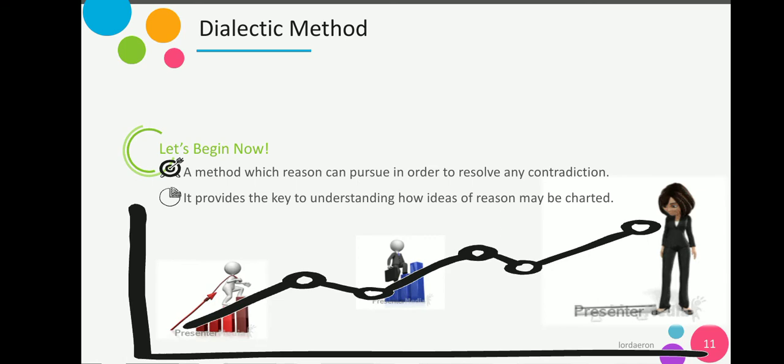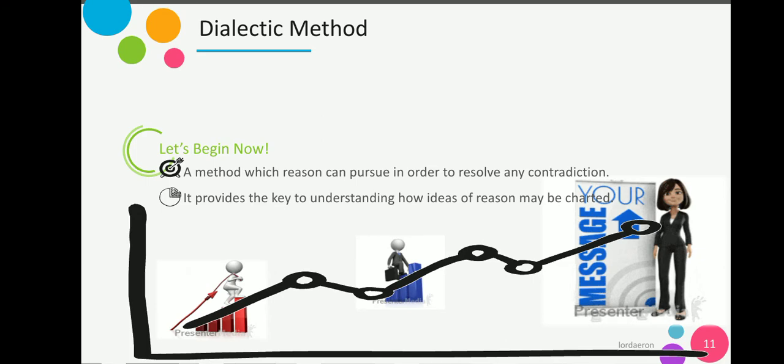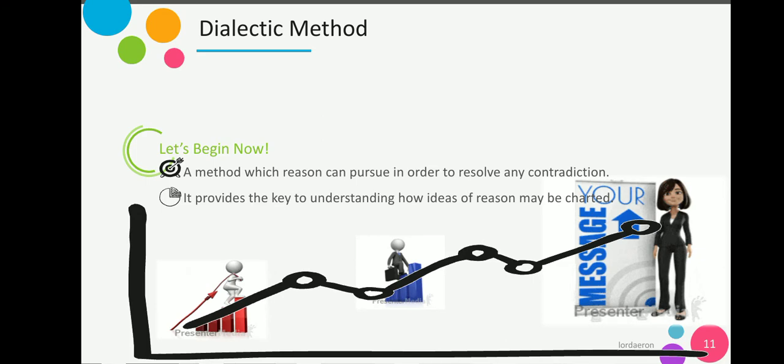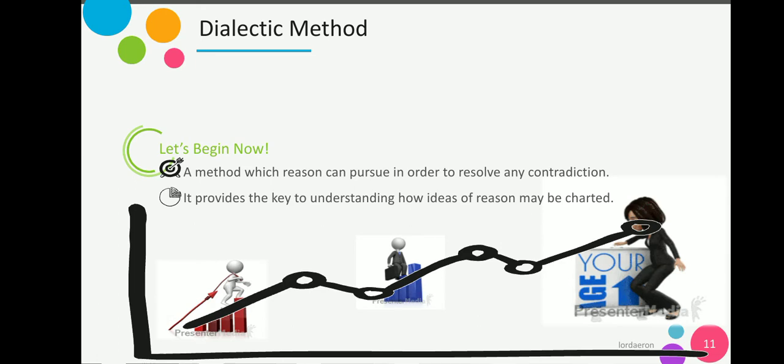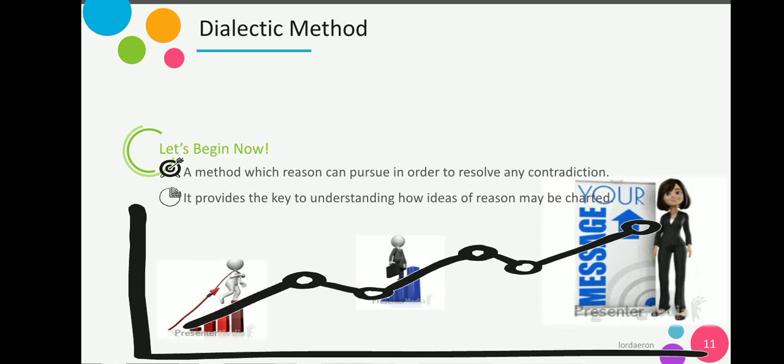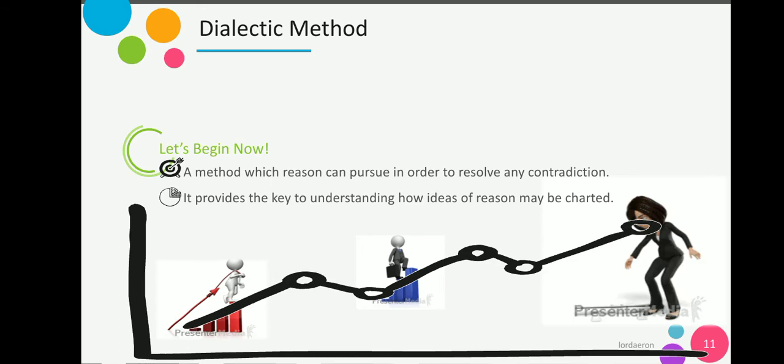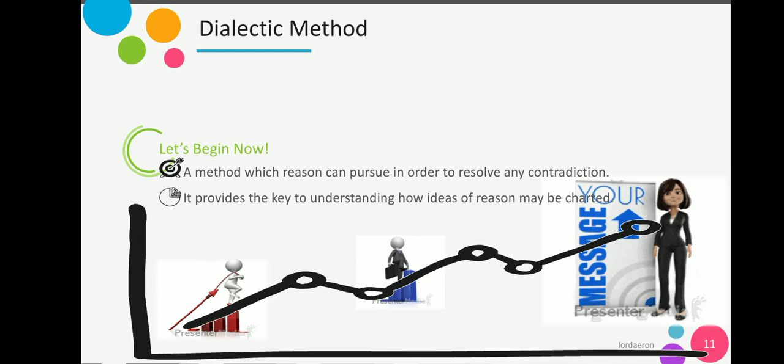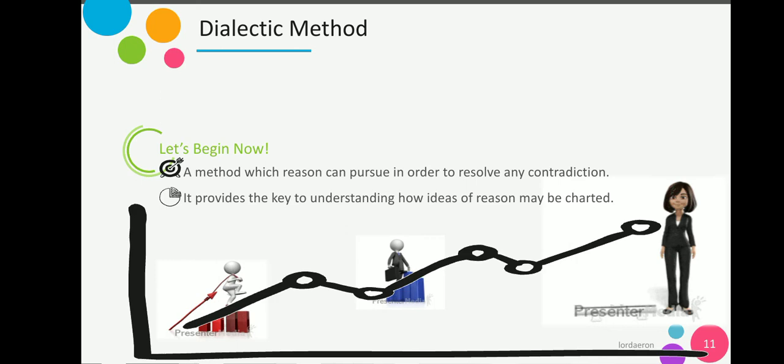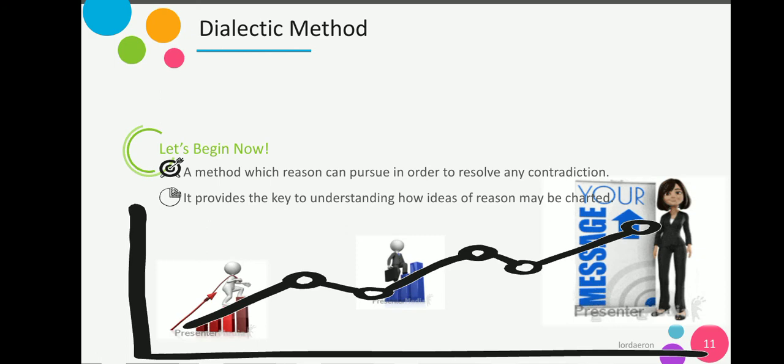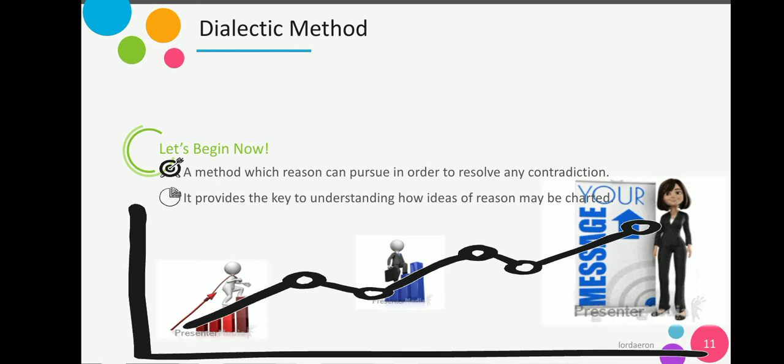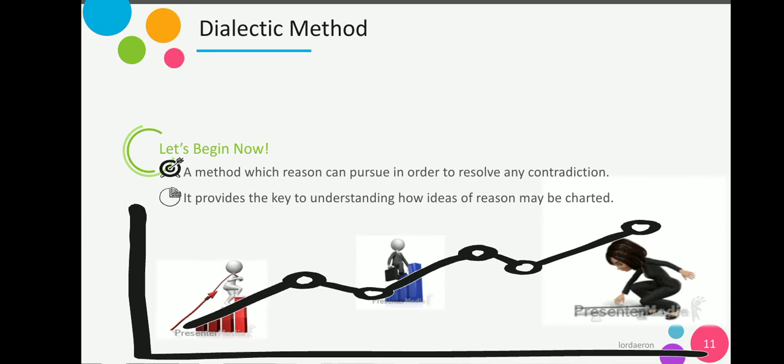The dialectic method. If you go back to our ancient philosophers, familiar is Socrates—the dialectic was a method of discovering truth through questioning and debate. For Kant, dialectic expressed reason's capacity to reach contradictory conclusions from apparently sound premises. In Fichte's view, it is a process of contradiction that underpins all of reality, a method which reason can pursue in order to resolve any contradiction. It provides the key to understanding how ideas of reason may be charted. I prepared a video. I do not own this video, it's just for educational purposes only, so you can better understand what this dialectic method is about. It will be briefly explained, so I want to share it with you. Let's begin now.